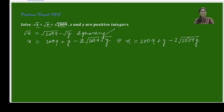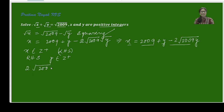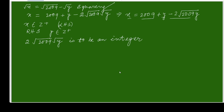Now if you analyze this: left hand side x is a positive integer as given. On the right hand side, 2009 is an integer, y is also a given positive integer, and the third term is twice square root of 2009 times square root of y. So this third term must also be an integer for the left hand side to equal the right hand side.